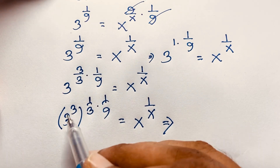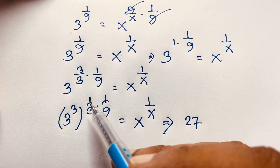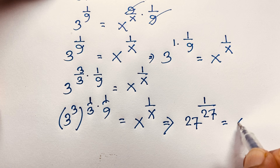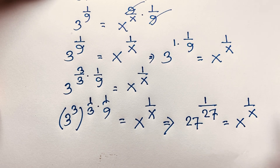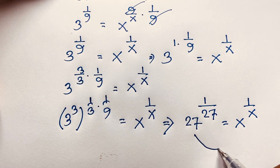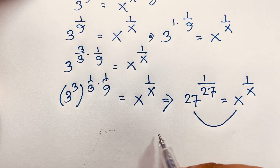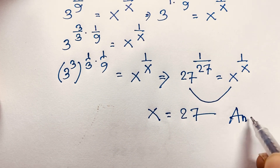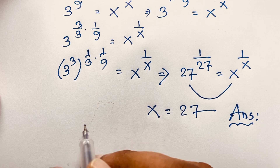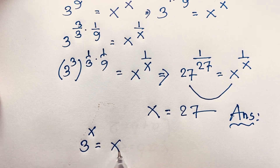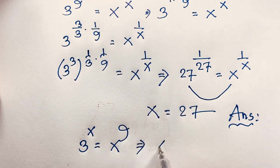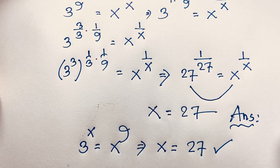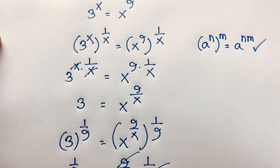Since 3 to the power 3 is 27, the left side becomes 1 over 27, giving 27 to the power 1 over 27. Comparing both sides, x is equal to 27. This is our final answer: for 3 to the power x equals x to the power 9, x equals 27. If you enjoyed this math problem, please subscribe to my channel for more interesting videos. Goodbye, take care.